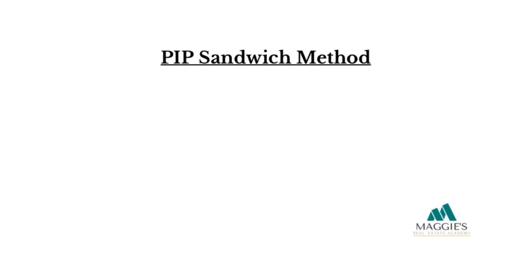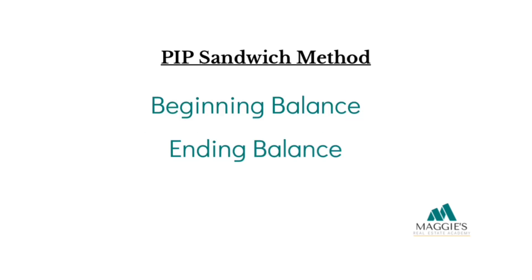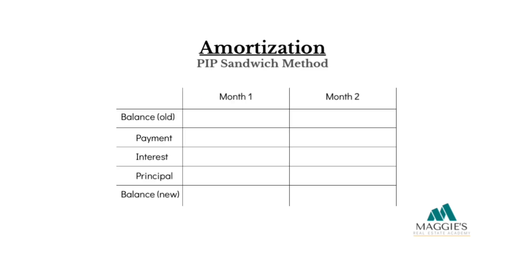If the PIP is the meat, then we'll use the beginning balance and the balance after each month's payment as what we'll call the sandwich buns. Notice how the two balances are the buns and our PIP — payment, interest, and principal — are the meat. We'll walk you through solving these amortization problems step by step to ensure you're fully prepared for your exam.